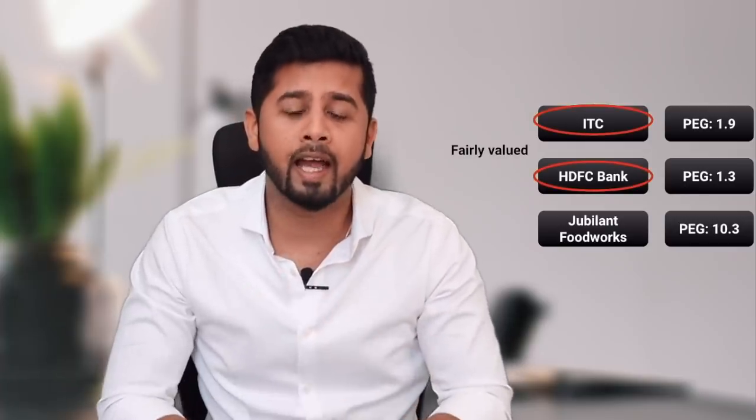For example, ITC has a P/E-G ratio of 1.9, HDFC Bank has a P/E-G ratio of 1.3, and Jubilant Food Works has a P/E-G ratio of 10.3. So ITC and HDFC Bank are looking fairly valued and Jubilant Food Works is looking overvalued based on the P/E-G ratio as well.